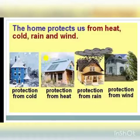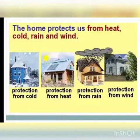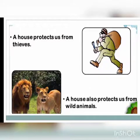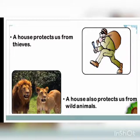The next question says: what does a home protect us from? The home protects us from heat, cold, rain, and wind. As you can see in the picture, a home protects us from cold, heat, rain, and wind. A house also protects us from thieves and wild animals. Wild animals are very dangerous and can harm us, so having a house is very important for all of us.